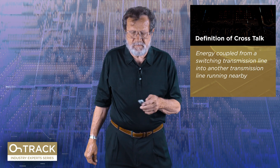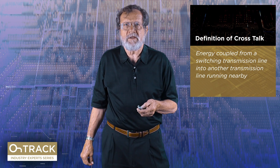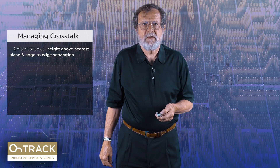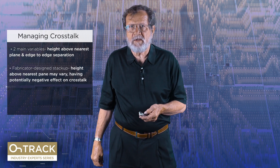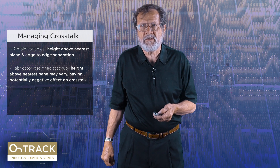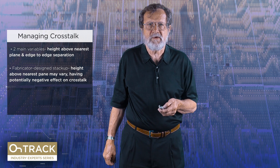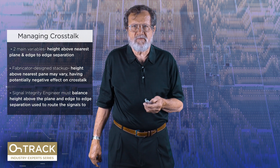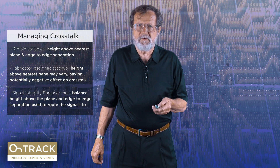Managing crosstalk — this is the interaction between two signals that are running side by side. The two main variables are height above the nearest plane and the separation edge to edge. Those are the two primary variables here. And so if we let the fabricator do the stack-up, what they will likely change is the height above the nearest plane; they won't change the separation. That's a reason you don't want the fabricator to do that stack-up for you. The SI engineer is going to have to balance height above the plane, edge-to-edge separation, and so on in order to control the crosstalk.